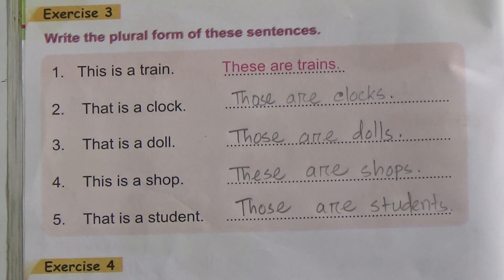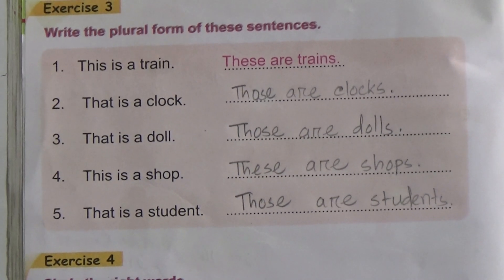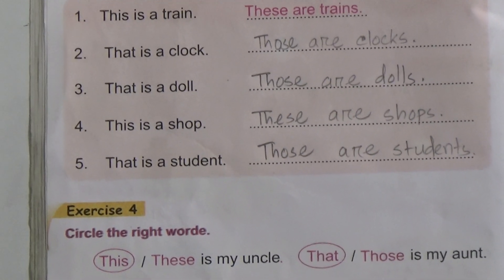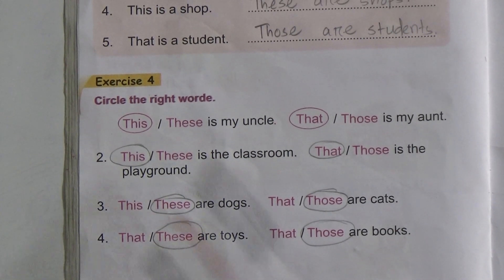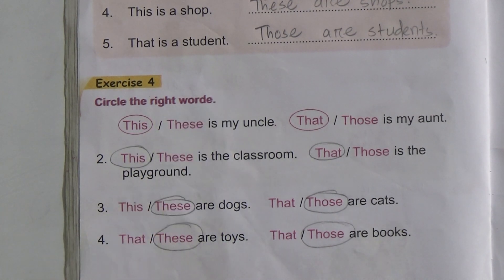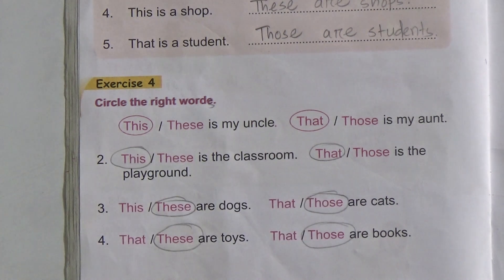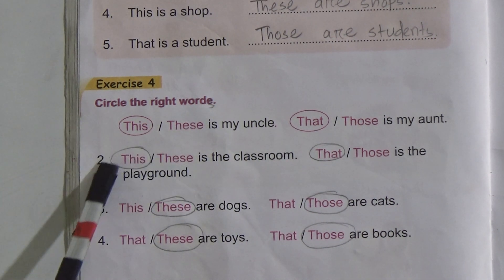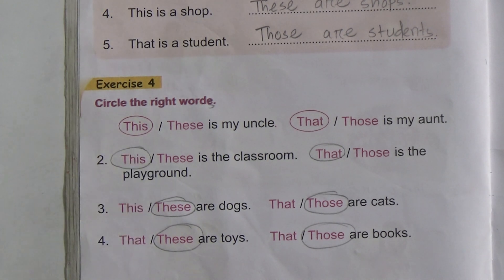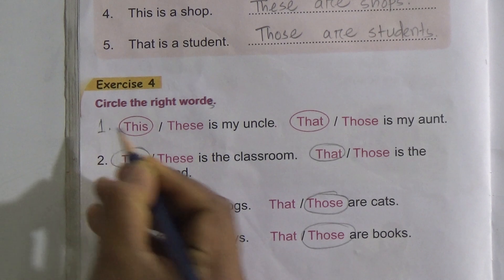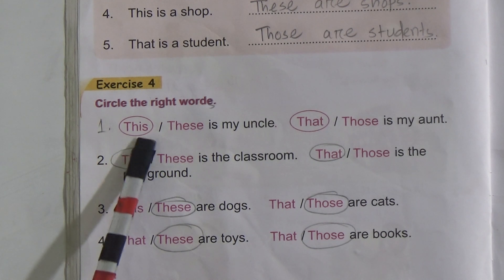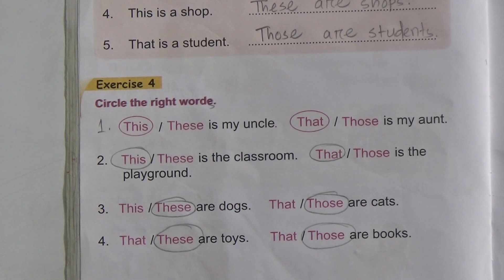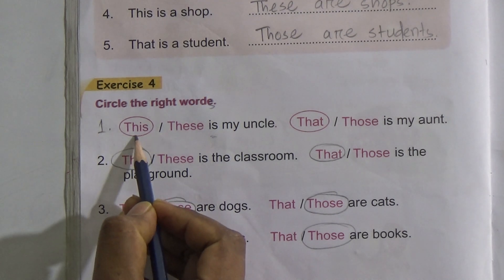This is all about Exercise 3. Now we will discuss Exercise number 4: Circle the right words. In your book it's written 'W-O-R-D-E', but it should be 'words' — that's a mistake. Number 1 is done for you already. 'This or these is my uncle' — 'is' is singular, so we must use 'this', not 'these'.